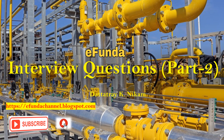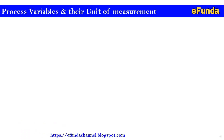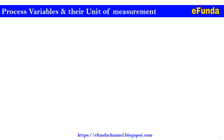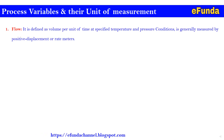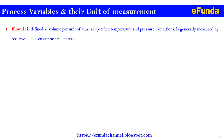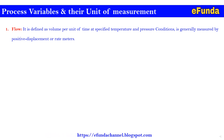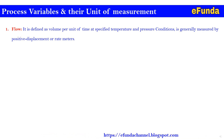So let's begin with our today's topic: interview questions on process variables and their units of measurement. First point is flow — it is defined as volume per unit of time at a specified temperature and pressure condition, and is generally measured by positive displacement or a rate meter.